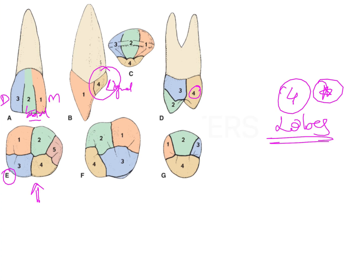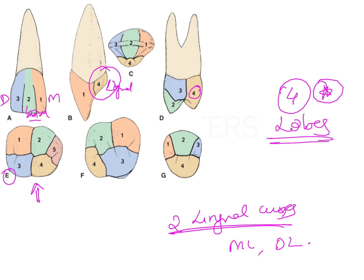For the mandibular second premolar, there are sometimes two lingual cusps, named mesolingual and distolingual. In molars, enamel formation can arise from four lobes or more - up to five lobes. The name of each lobe represents its corresponding cusp; for example, the mesiobuccal lobe is named after the mesiobuccal cusp.